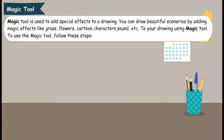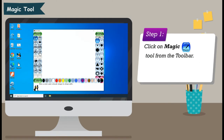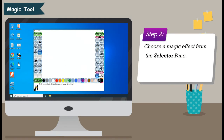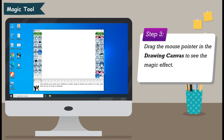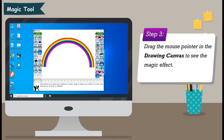Magic Tool is used to add special effects to a drawing. You can draw beautiful sceneries by adding magic effects like grass, flowers, cartoon characters, sound, etc. to your drawing using Magic Tool. To use the Magic Tool, follow these steps. Step 1: Click on Magic Tool from the toolbar. Step 2: Choose a magic effect from the selector pane. Step 3: Drag the mouse pointer in the drawing canvas to see the magic effect.